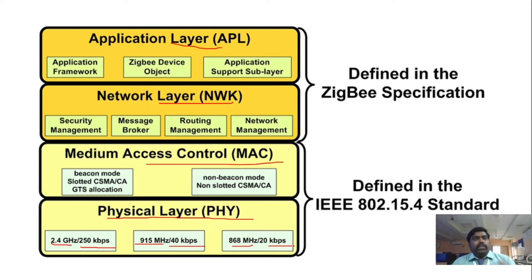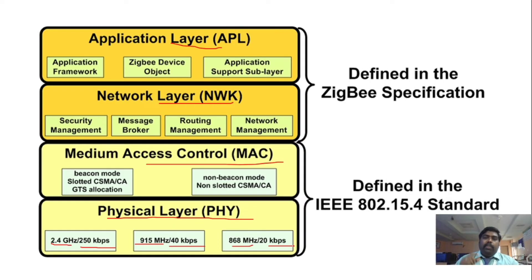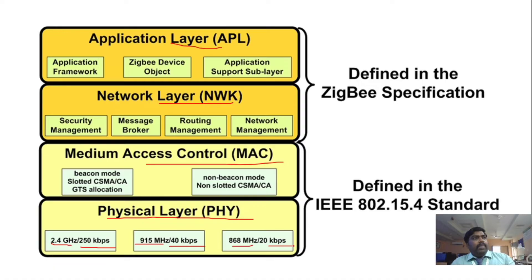The medium access layer performs access control using CSMA-CA — it senses the carrier and checks if the link is free before data transfer, thus avoiding collisions. The network layer performs security management, routing management, and network management. The application layer is the platform that allows Zigbee devices to communicate with the network layer.